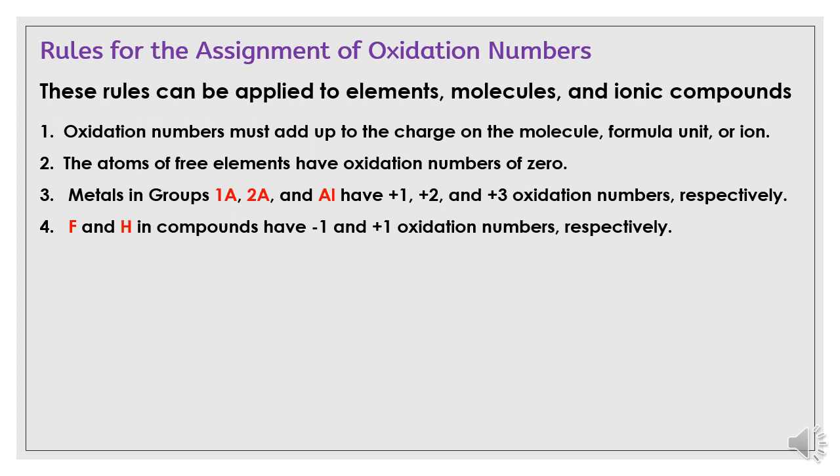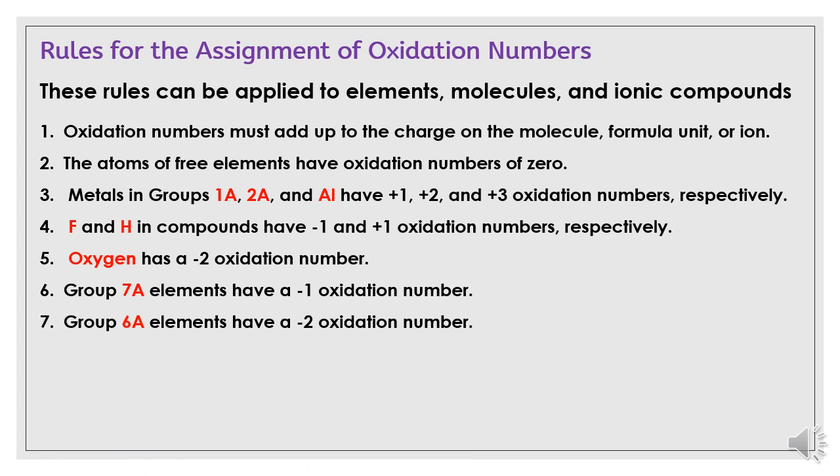Fluorine ions and fluorine atoms and hydrogen atoms in compounds have -1 and +1 oxidation numbers respectively. Oxygen has a -2 oxidation number. Group 7A elements have a -1 oxidation number. Group 6A elements have a -2 oxidation number. Group 5A elements have a -3 oxidation number.